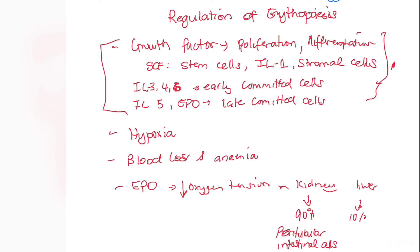Blood loss also triggers red blood cell formation to restore blood volume. Anemia — defined as hemoglobin below 15 for males or below 13 for females — similarly stimulates the body to produce more red blood cells. EPO is a key regulator and is stimulated when there is decreasing oxygen tension in the kidneys. Ninety percent of erythropoietin is produced in the peritubular interstitial cells of the kidney, with an additional 10% synthesized in the liver — so the kidney is the major site of erythropoietin production.